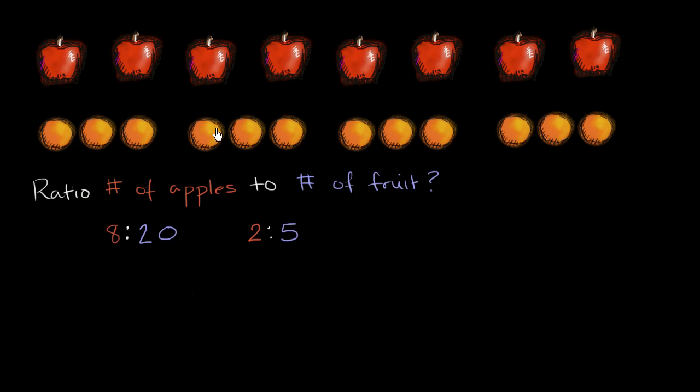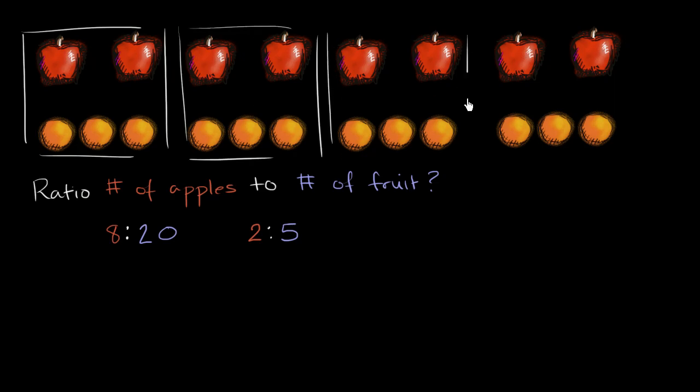Now does this make sense? Well, if we divide everything into groups of four—or if we divide into four groups, I should say. So one group, two groups, three groups, and four groups. And that's the largest number of groups that we can divide these into so that we don't have to cut up the apples or the oranges.